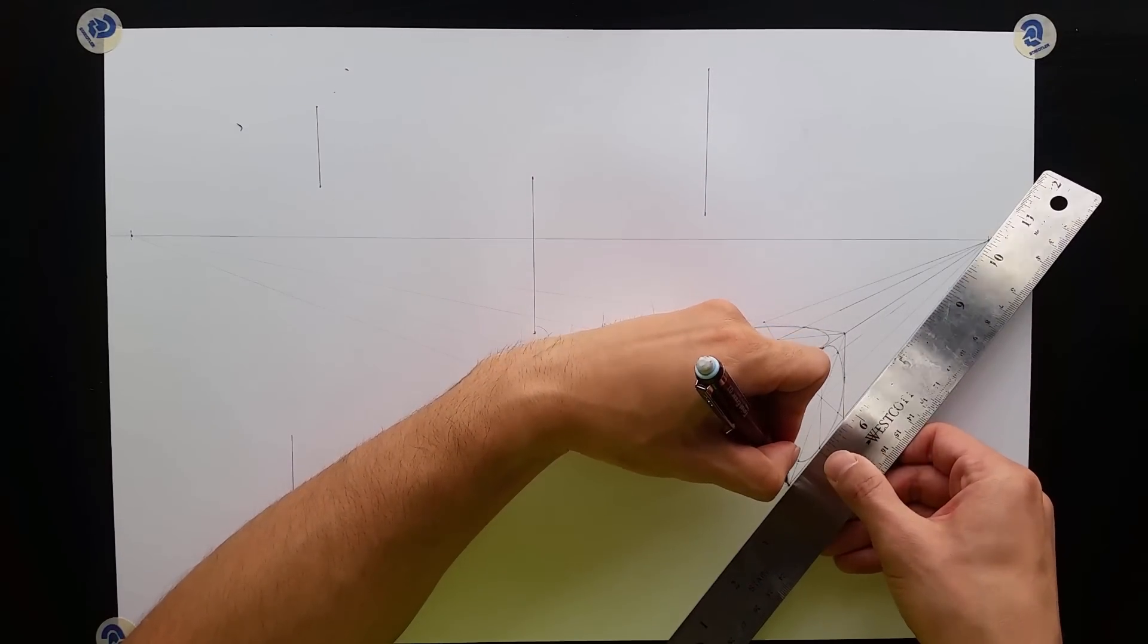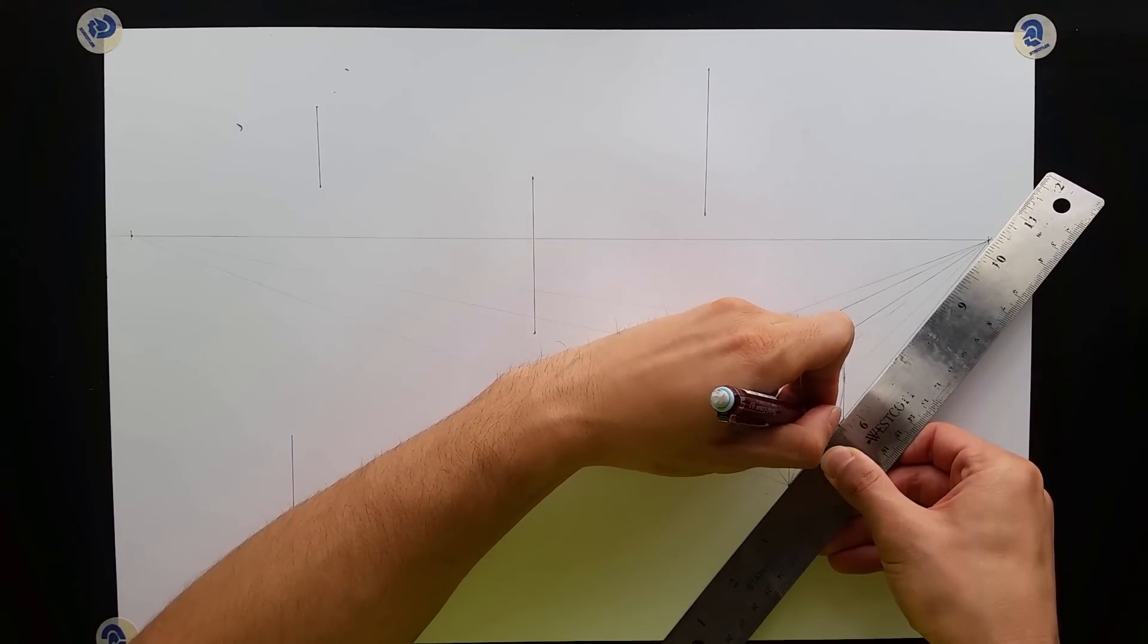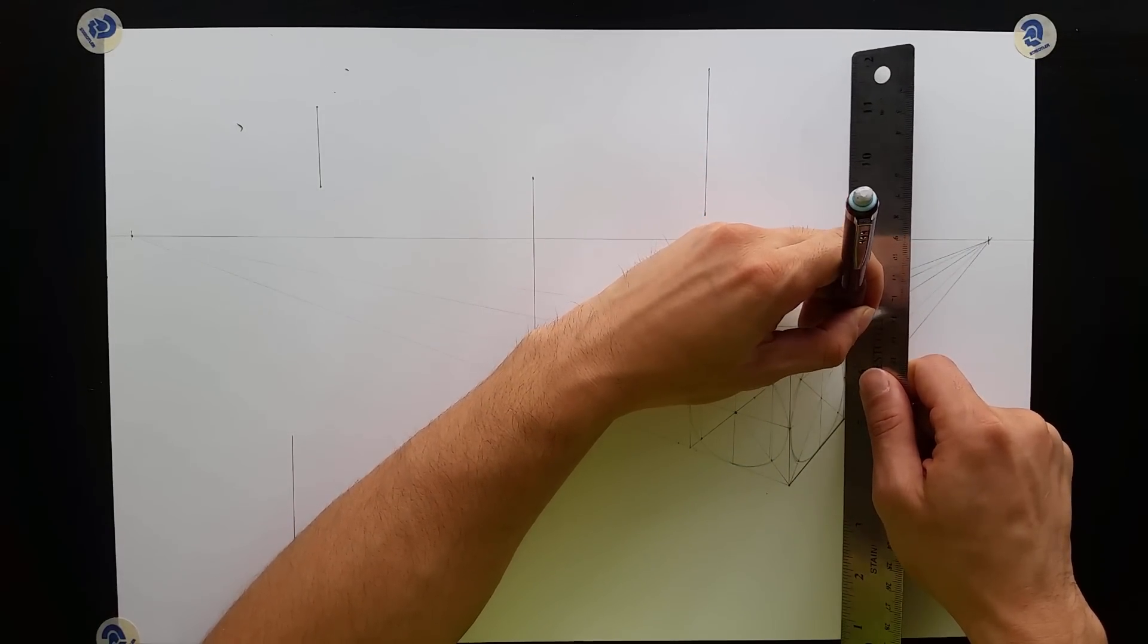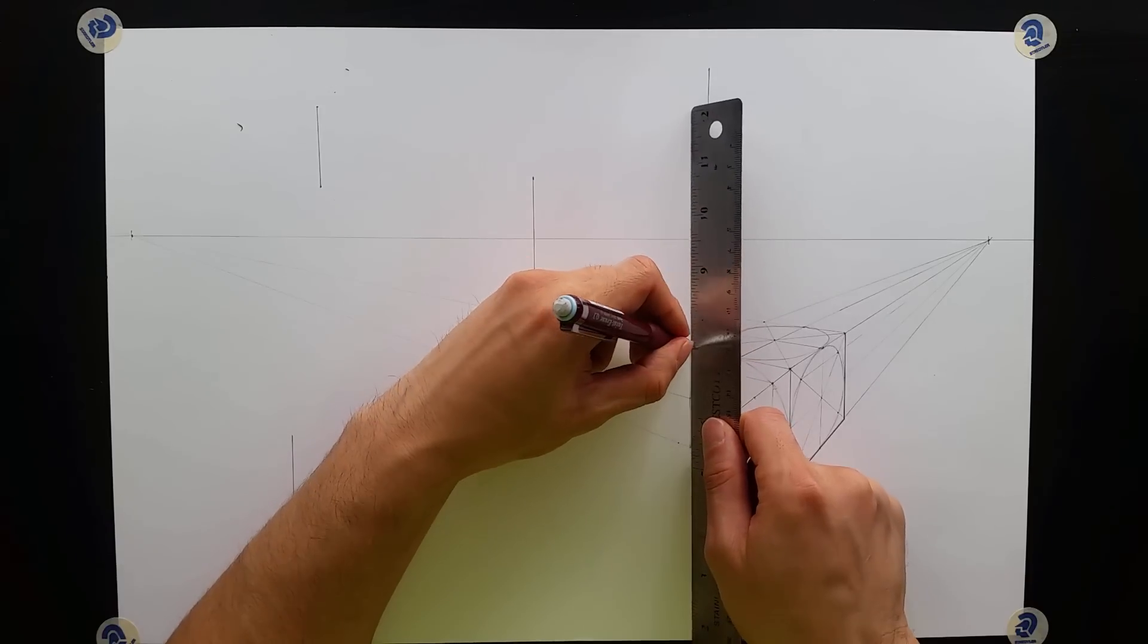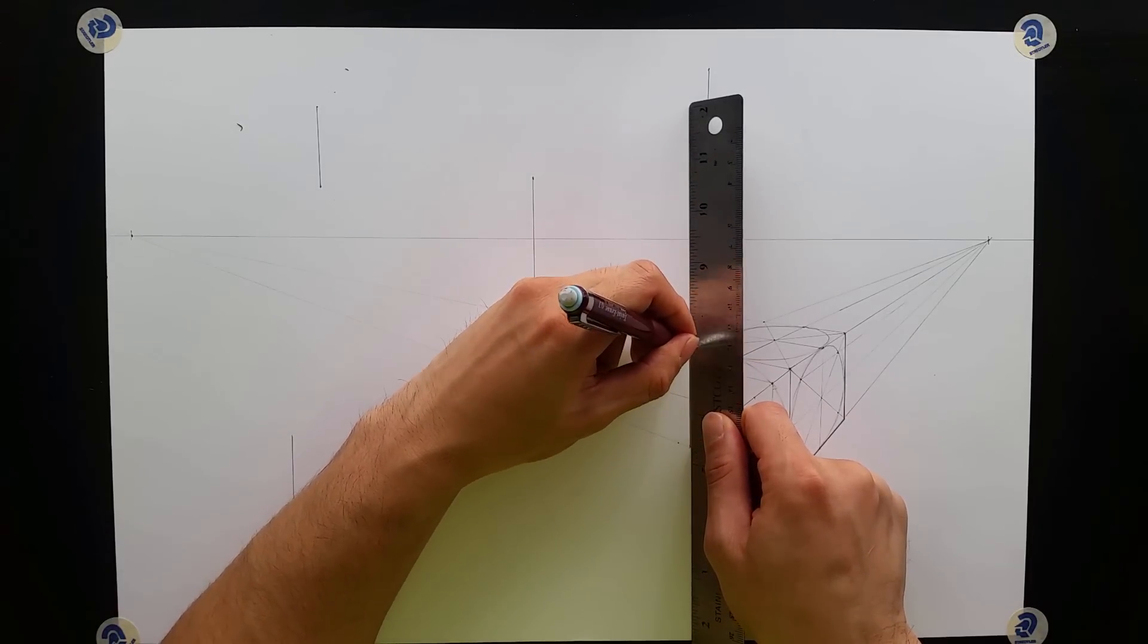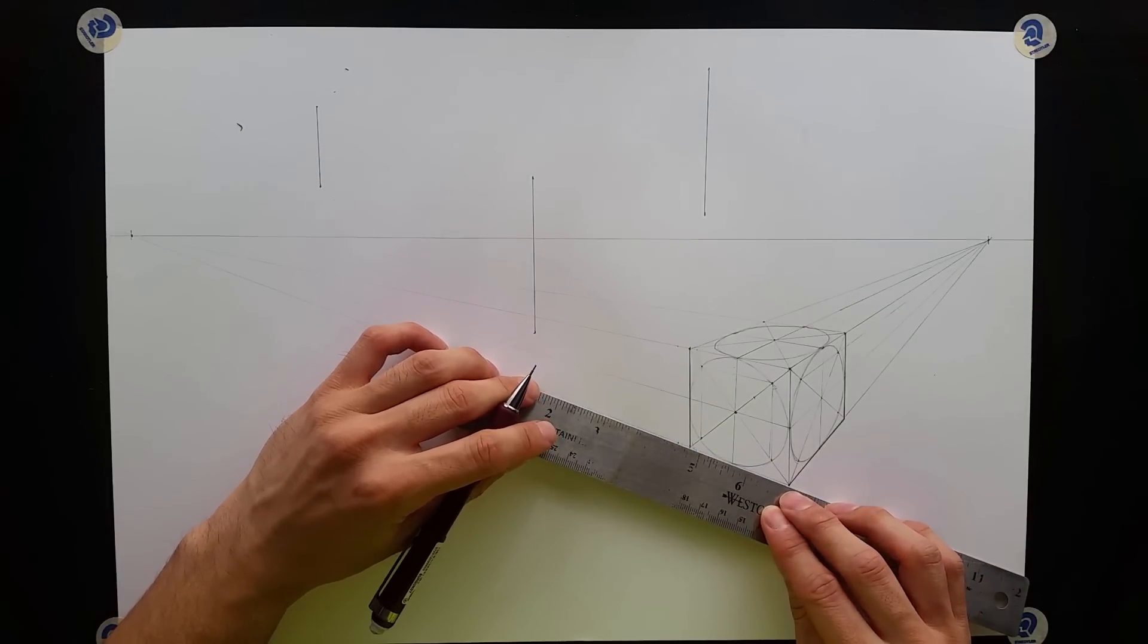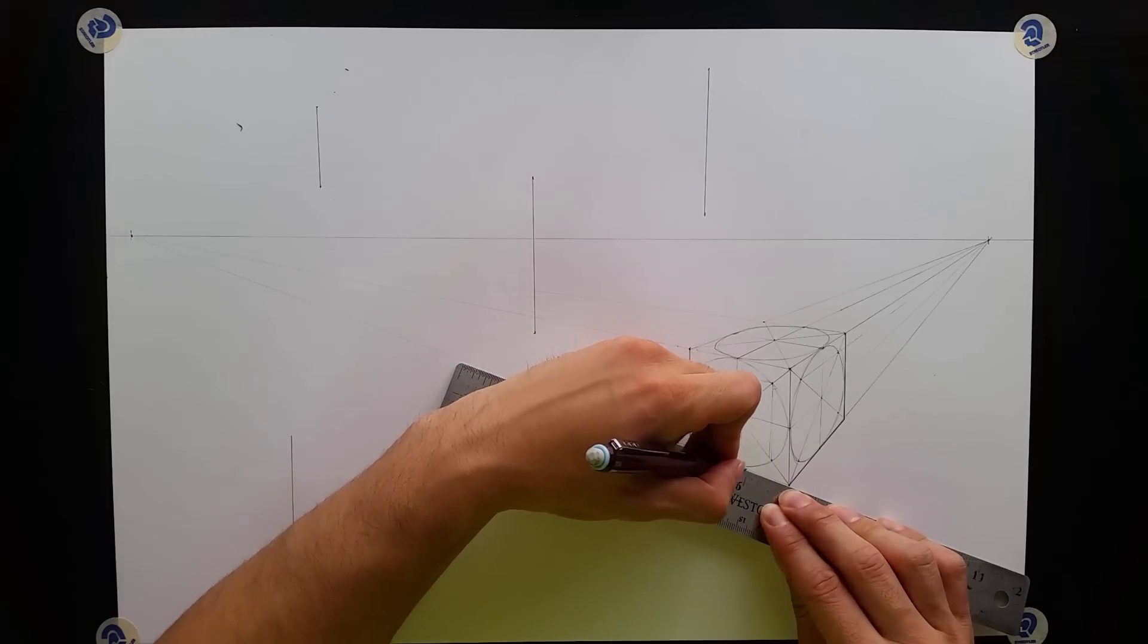And finally, I'm going to just tidy this up and darken the sides a little bit. This is why it's good to draw light in the beginning, because then when you darken up the edges at the end, you'll have a nice variety of line weight.